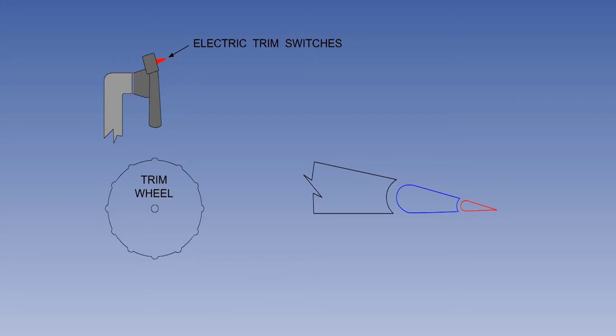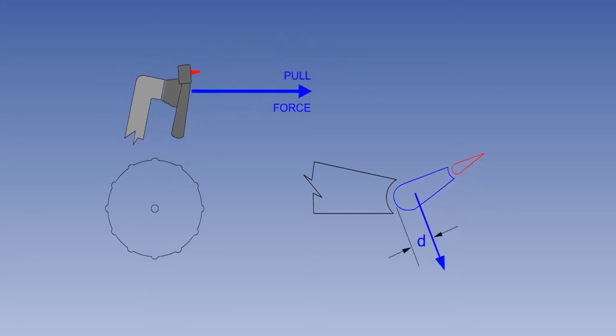Let's consider an aircraft with a forward CG, a nose-heavy aircraft. To maintain equilibrium, the pilot must move the stick aft to move the elevator up. Holding the elevator up requires a pull force. The aircraft is in equilibrium, in trim.